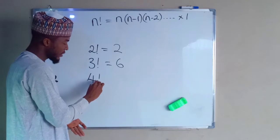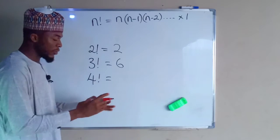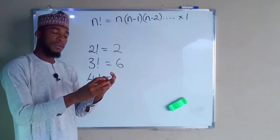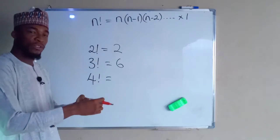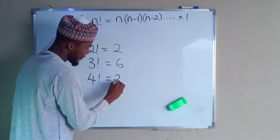4 factorial is equal to 4 times 3, which is 12, times 2, which is 24, times 1 is also 24.